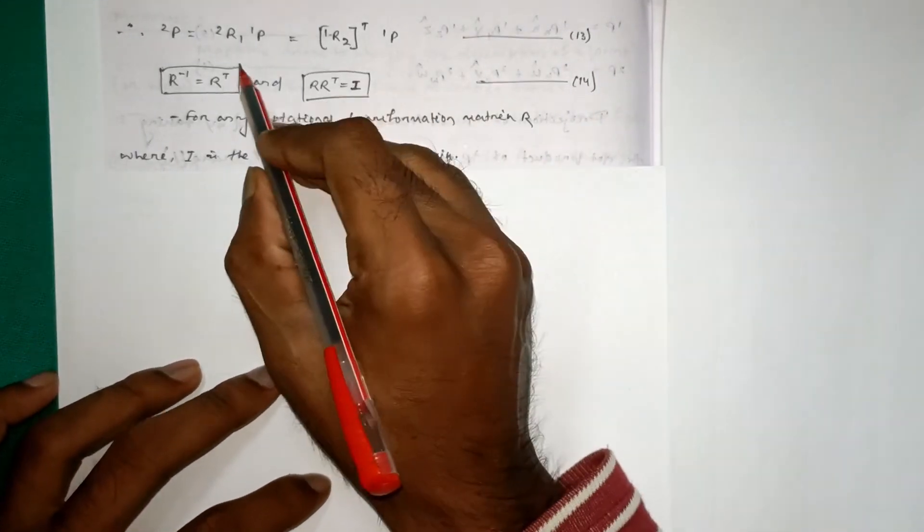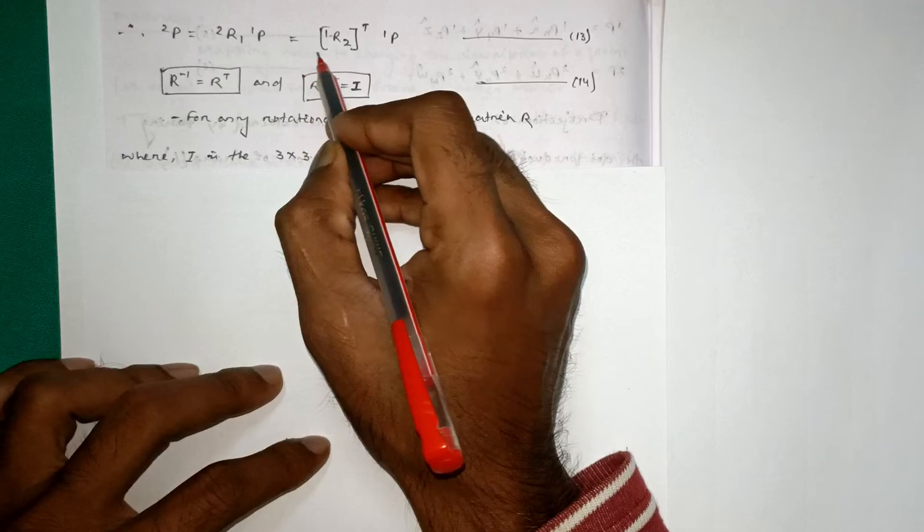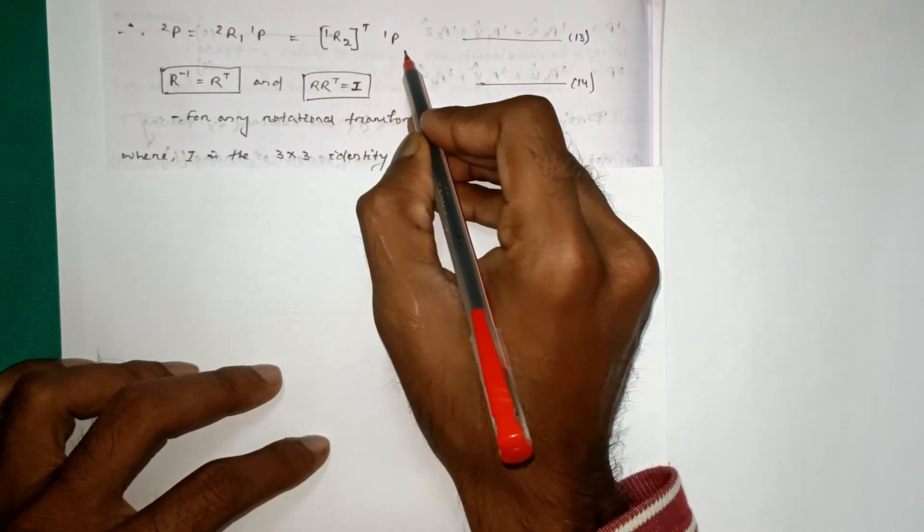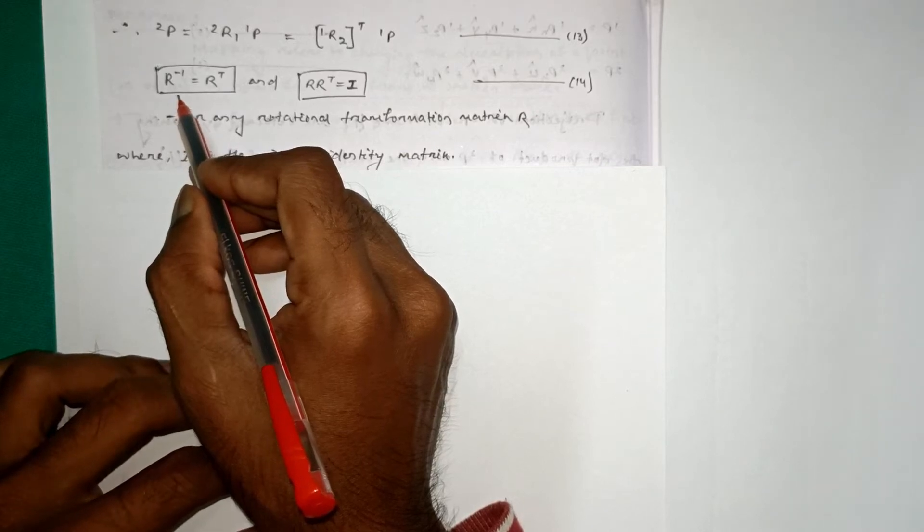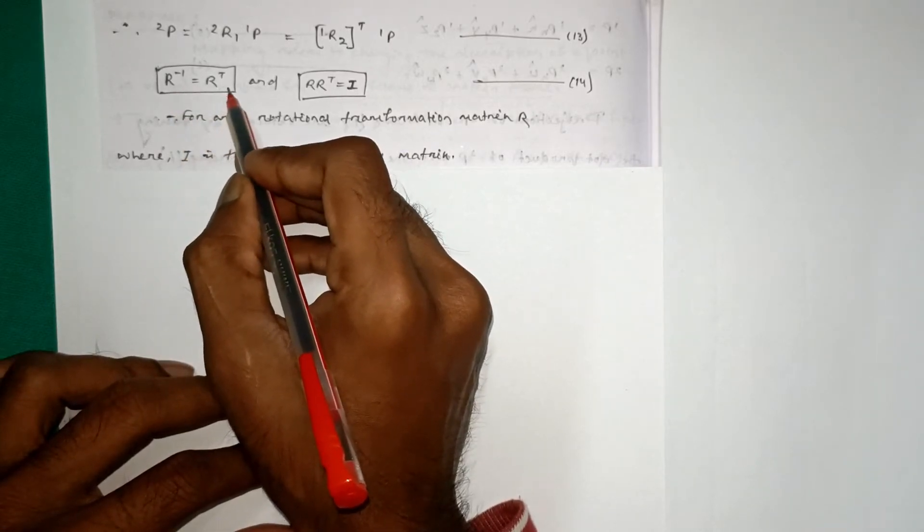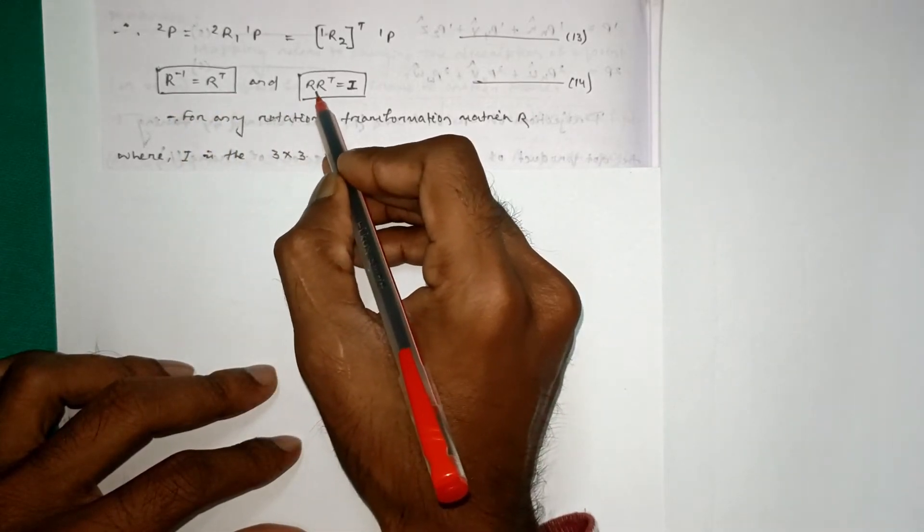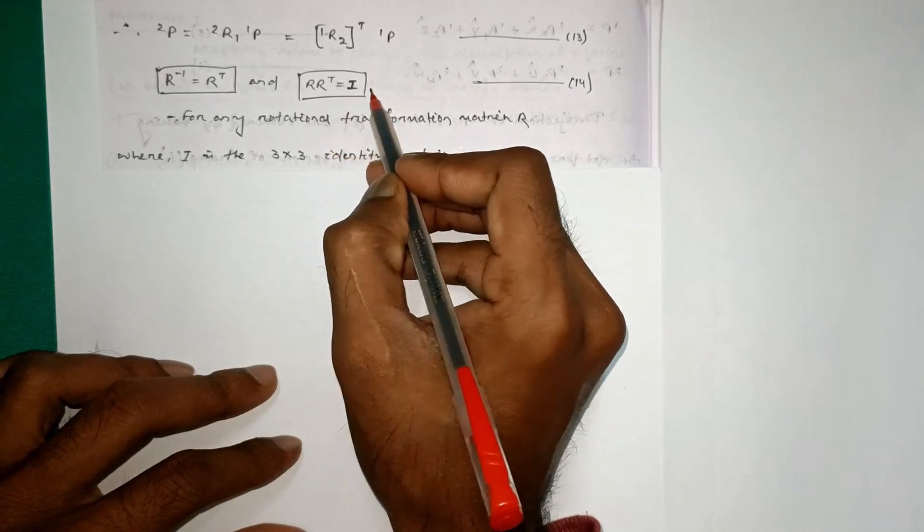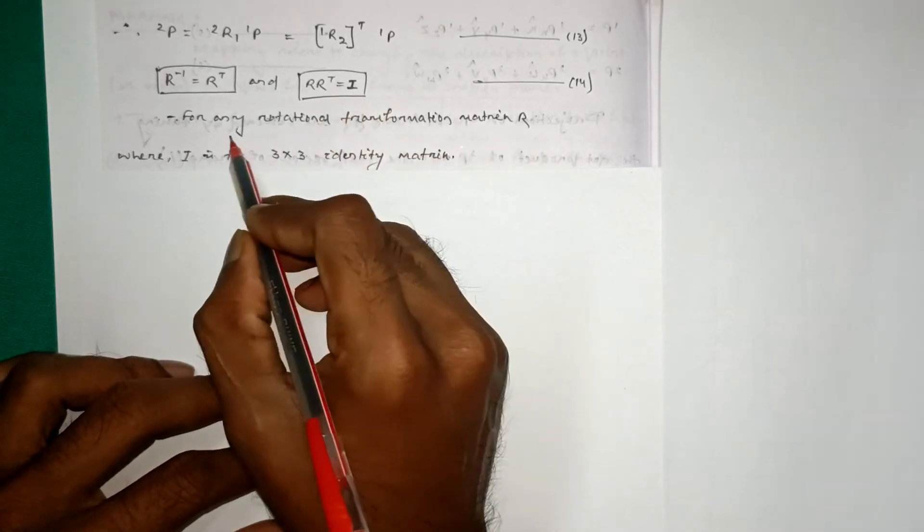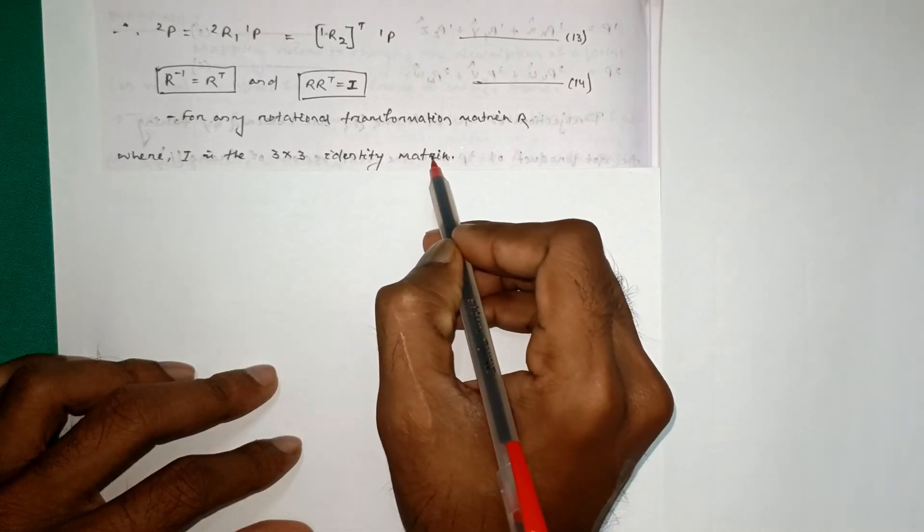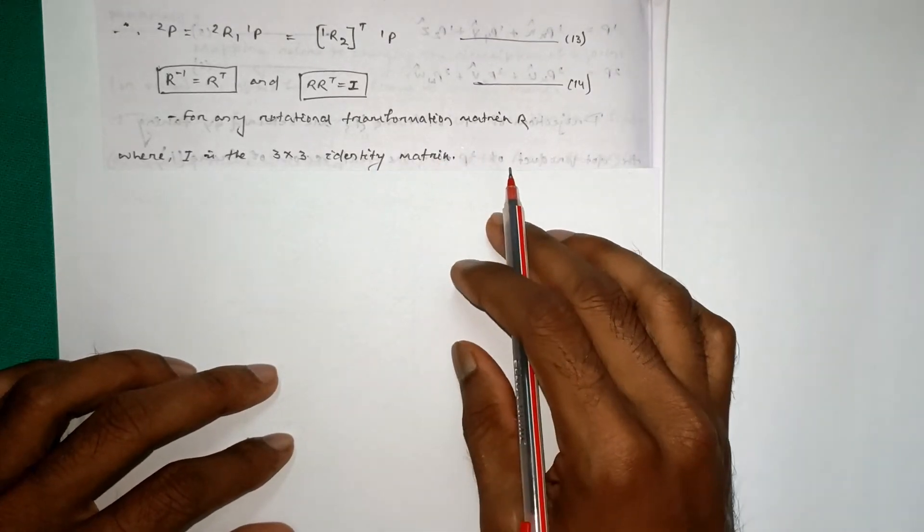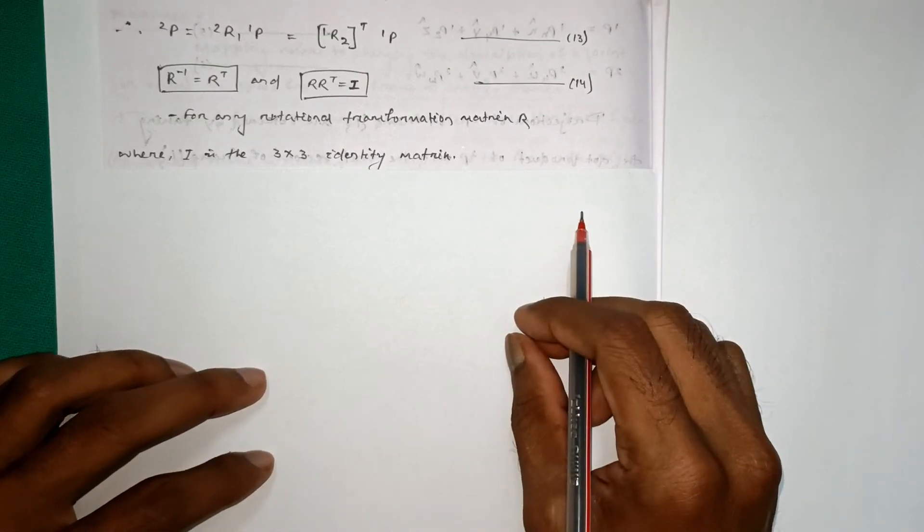So 2P is equal to 2R1 1P, that is equal to 1R2 transpose 1P, that is equation number 13. Where we must know R inverse is equal to R transpose, that's why R into R transpose is equal to I. So what is now I, where I is the 3 cross 3 identity matrix. So this is all about rotation in matrix. Thank you.